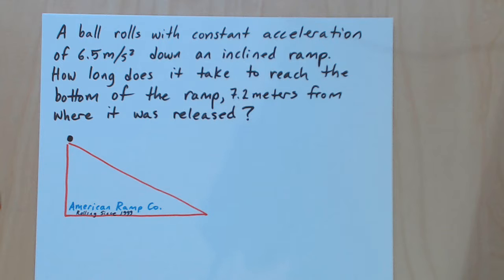A ball rolls with constant acceleration of 6.5 meters per second squared down this inclined ramp. Here's the ball, and it's going to roll down this ramp. How long does it take to reach the bottom of the ramp 7.2 meters from where it was released? So it was released here, and by the time it hits the bottom, that's 7.2 meters.